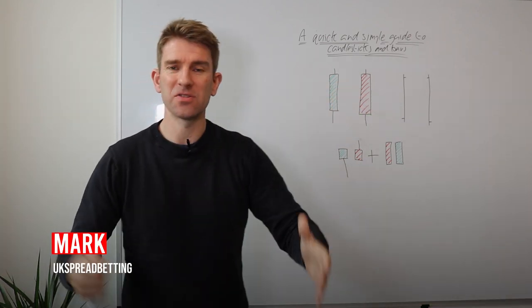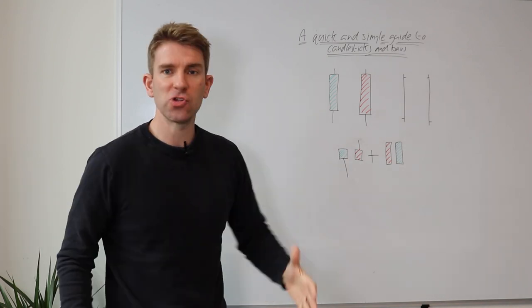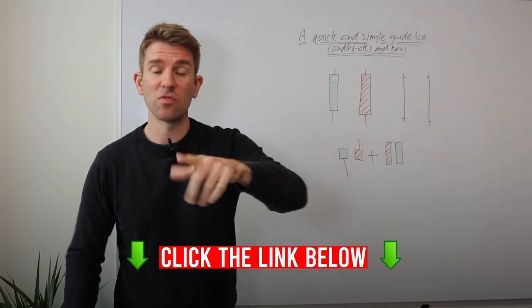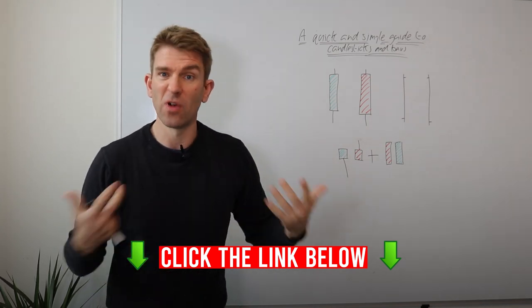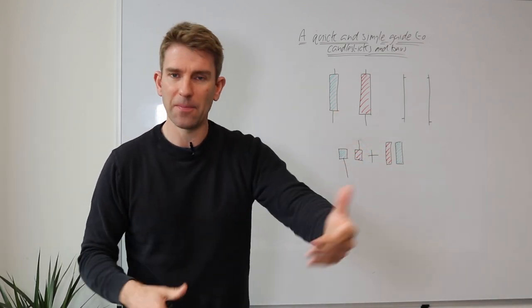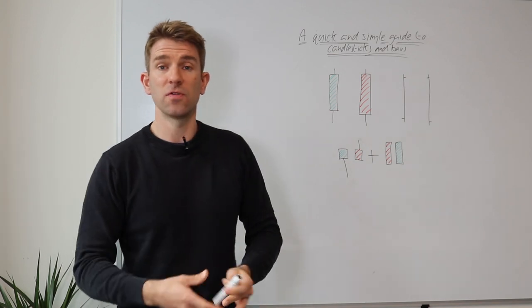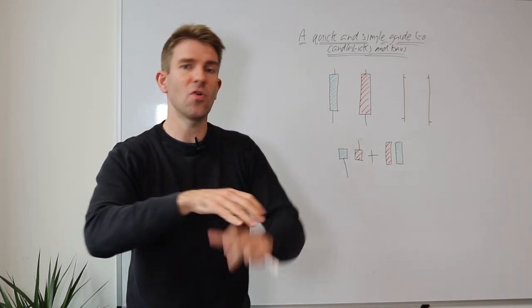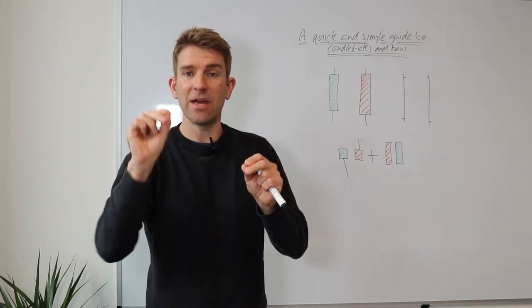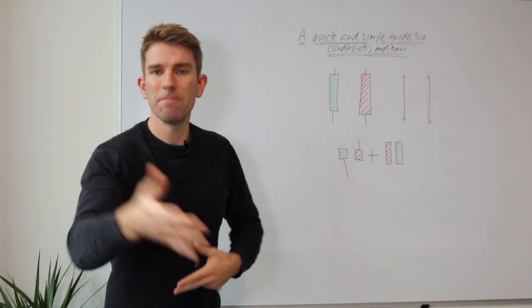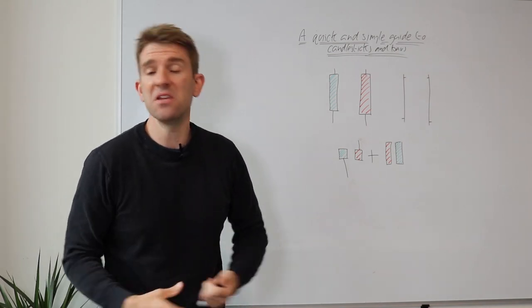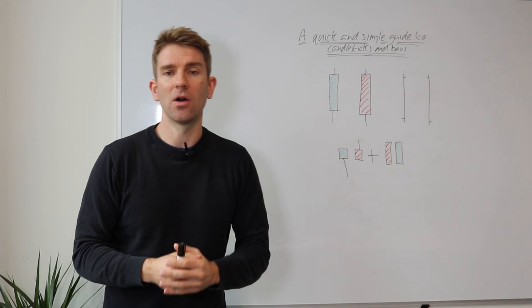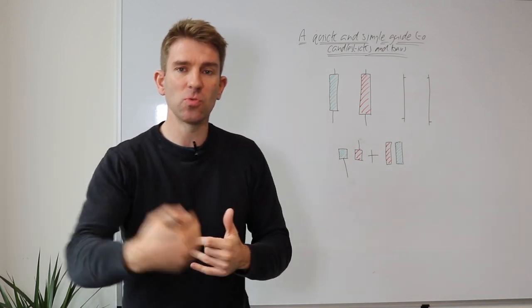If you're a beginner trader, you've probably seen candlesticks and bars and wondered what is going on, what are they showing me — I'm used to my line charts. The good thing about these, and why traders use them, is you're getting four pieces of information for the price of one. Traditional line charts normally just plot the close — the closing price of Tesla, IBM, or any stock — and that's it. For a trader, you want to know how high it went, how low, where it opened, where it closed.